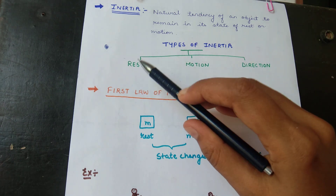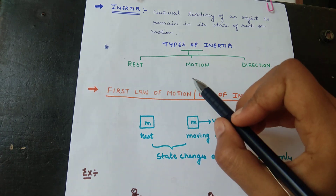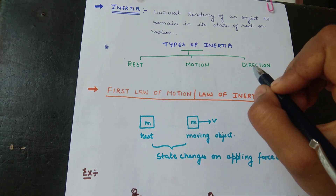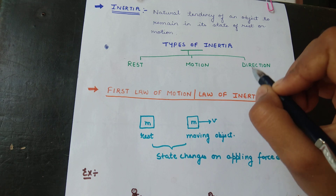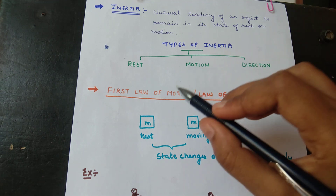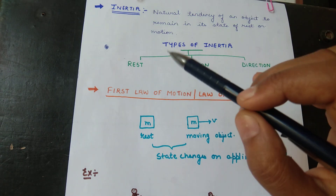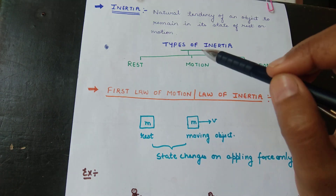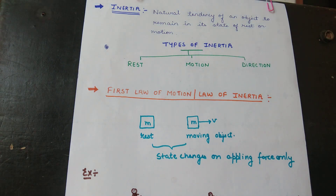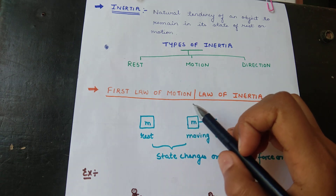If an object is at rest, it will want to remain at rest — inertia of rest. If an object is in motion, it will want to keep moving — inertia of motion. If an object is moving in a particular direction, it will want to continue in that same direction. These three states will not change until an external unbalanced force is applied. This natural tendency of an object is called inertia.